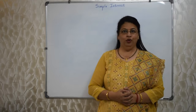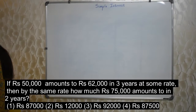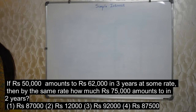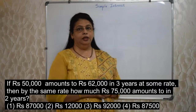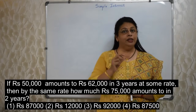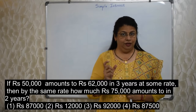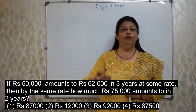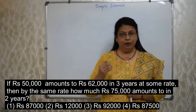The first sum will appear on your screen. If Rs. 50,000 amounts to Rs. 62,000 in 3 years at some rate, then by the same rate how much will Rs. 75,000 amount to in 2 years? The first sentence of the question will give us the rate, and we will make use of that rate to find out the second part of the question. Let's begin.